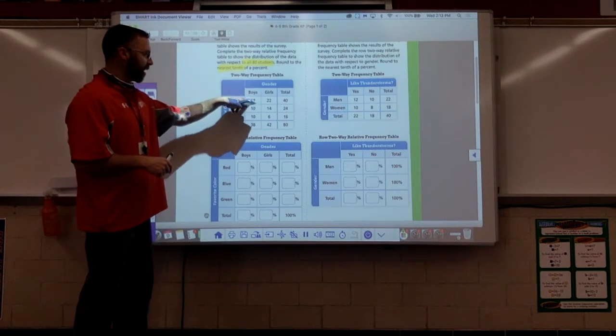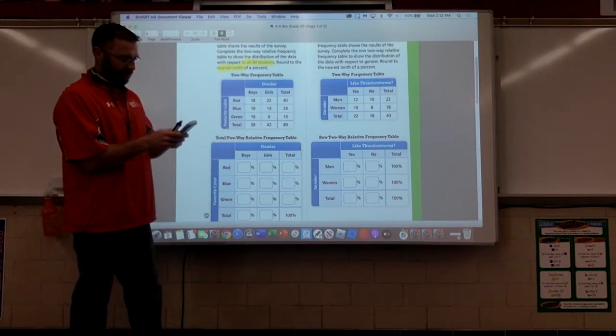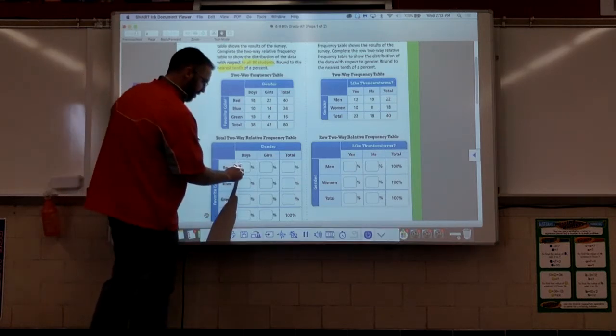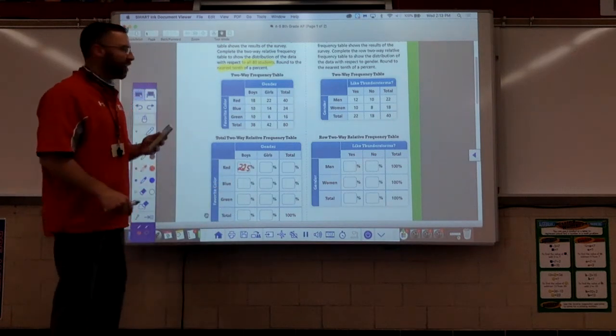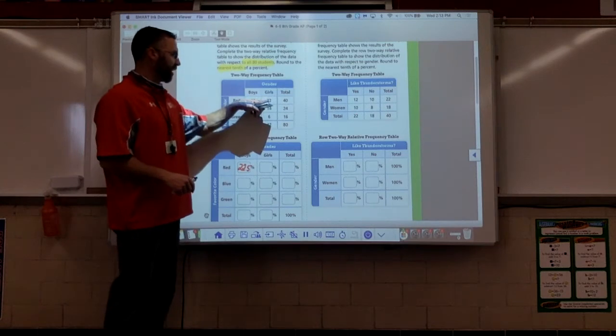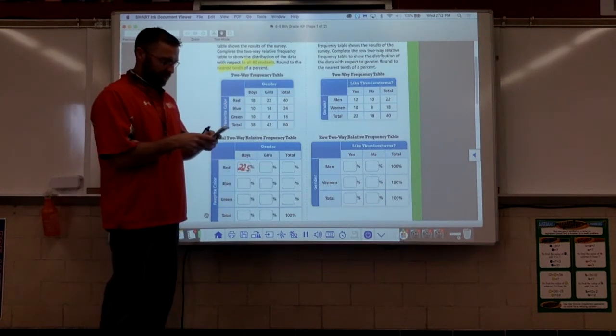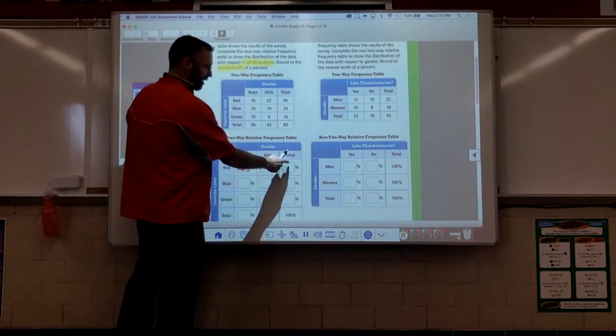For my boys that like red, it's 18 out of 80 kids. Part divided by whole, so 18 divided by 80 times 100, it's 22 and a half. 22.5 rounded off to the nearest tenth of a percent. Girls who like red, it's 22 girls out of 80, so 22 out of 80 times 100, 27 and a half.